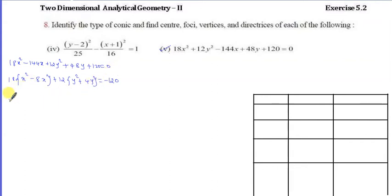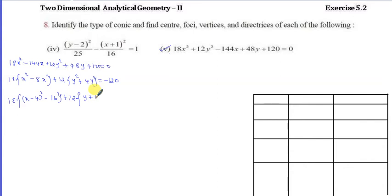We apply the complete square. For the x terms: 18 times (x minus 8/2)² which is (x minus 4) whole square, minus 16. For the y terms: plus 12 times (y minus 4/2)², giving us 18 into (x minus 4) the whole square minus 288.